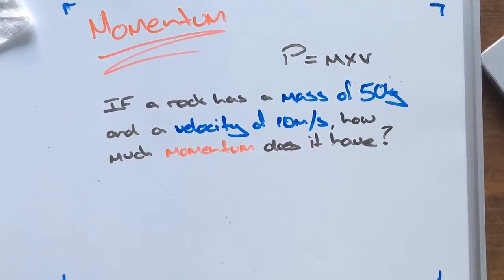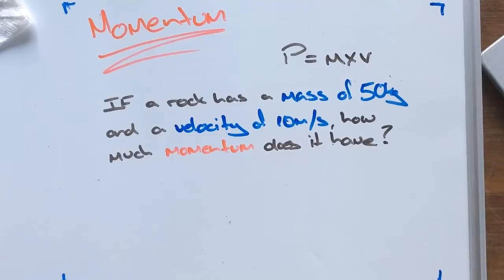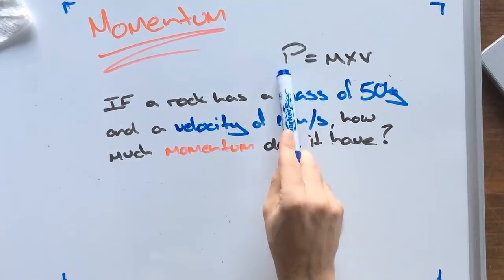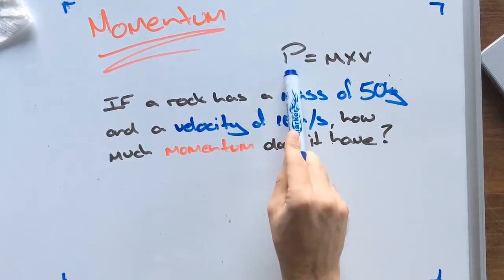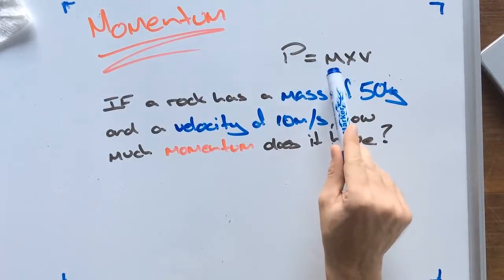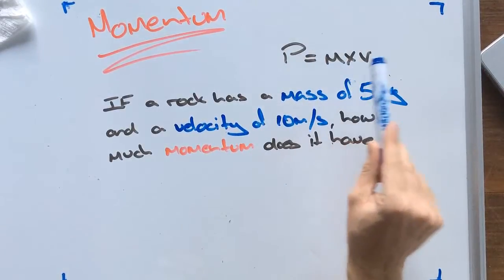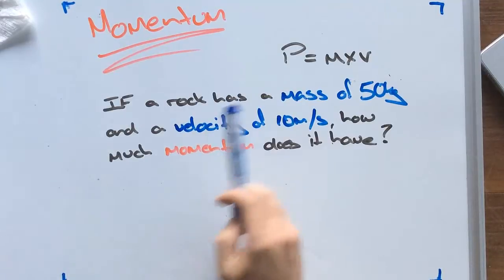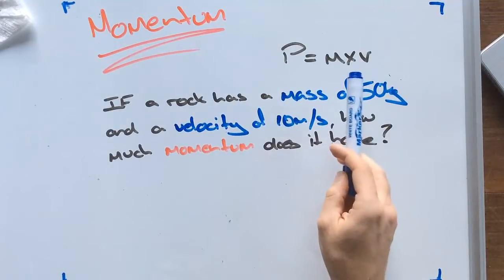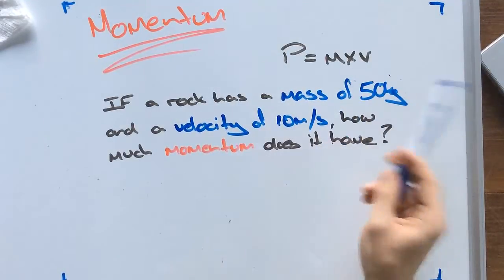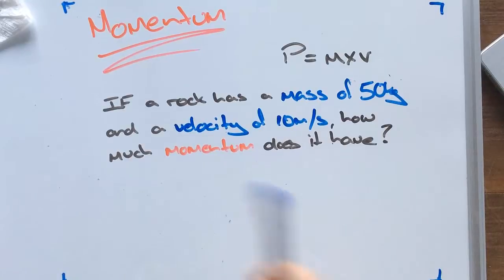So here we're looking at momentum. Remember our unit for momentum is p, and our formula is mass times velocity. So if we were to work out momentum, we need to have the mass and multiply it by the velocity.